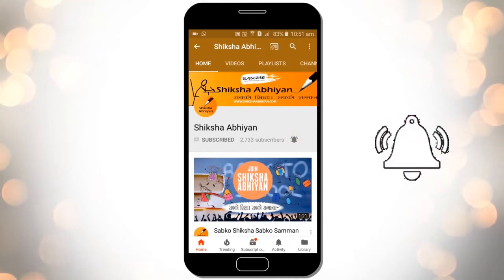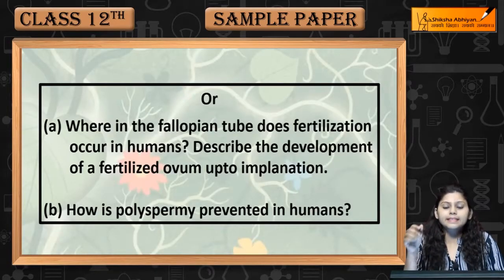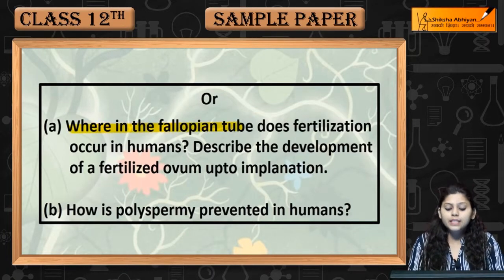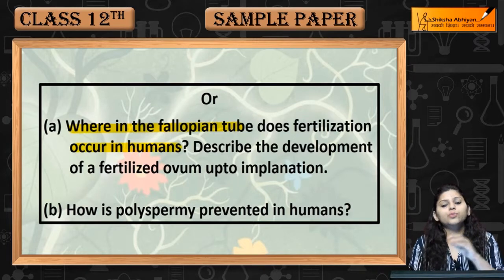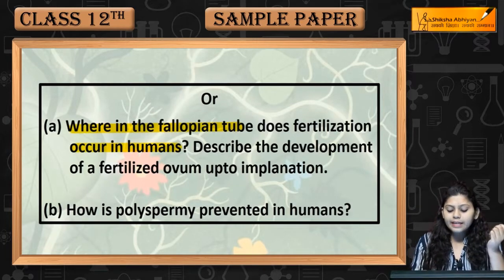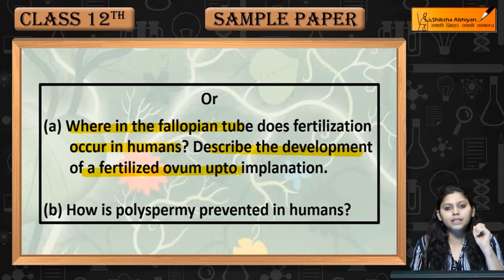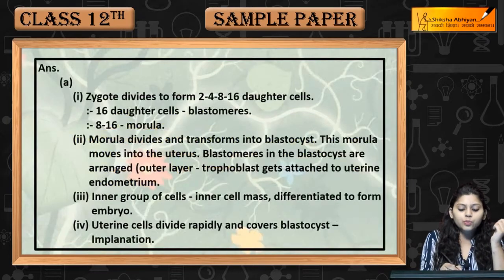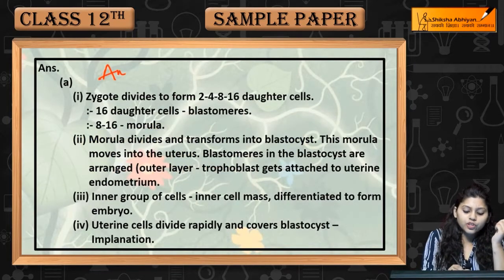The second question is: where in the fallopian tube does fertilization occur in humans? Fallopian tube mein fertilization kahan hoti hai? Describe the development of a fertilized ovum up to implantation. Sabse pahle, fallopian tube mein fertilization kahan hoti hai — ampulla region mein.